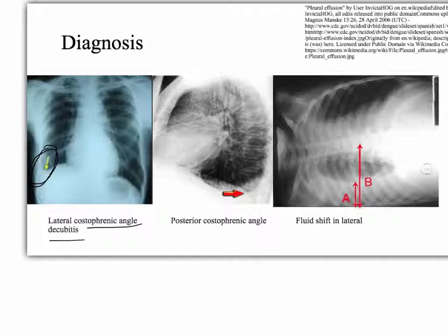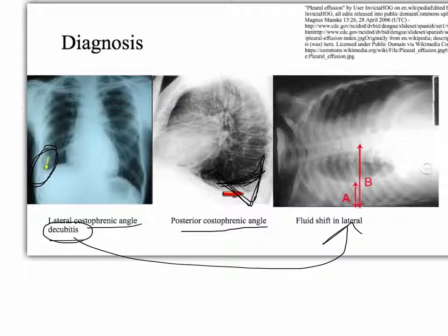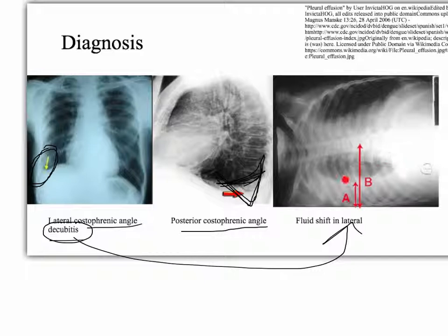You turn them sideways and look at the posterior costal phrenic angle — where it should go down, there's stuff in it, and that's bad. Last thing you can do is have the person lay in the lateral decubitus position. The lateral decubitus is like the gold standard for saying that is a pleural effusion. When the person lays down, fluid shifts, and you can actually measure the distances and get ratios. However, in some situations you'll have a pleural effusion but laying down won't produce a fluid shift.